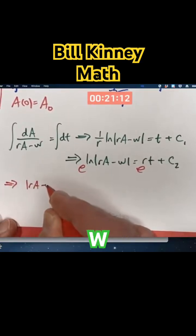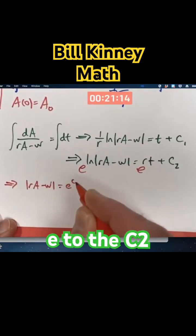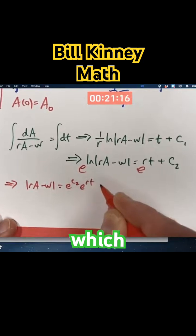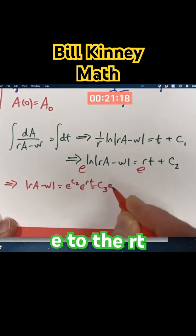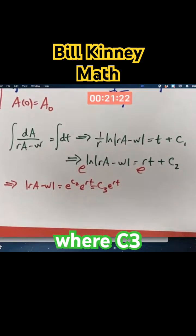The absolute value of RA minus W is E to the C2, E to the RT, which I'll write as C3 E to the RT. Or C3 is E to the C2.